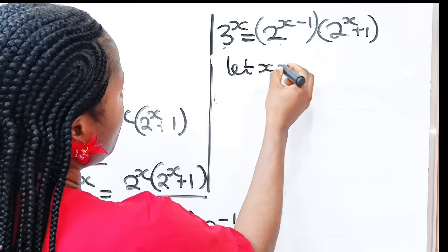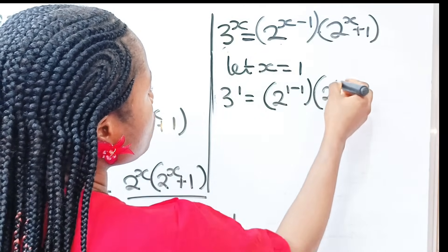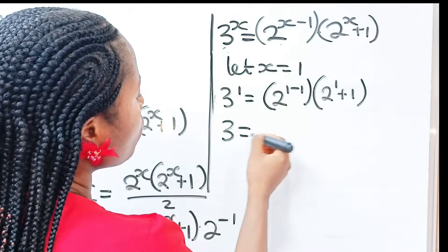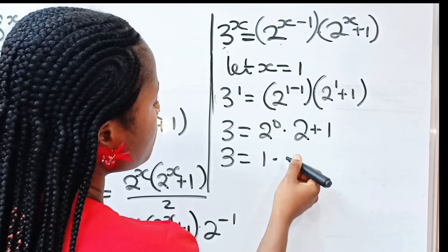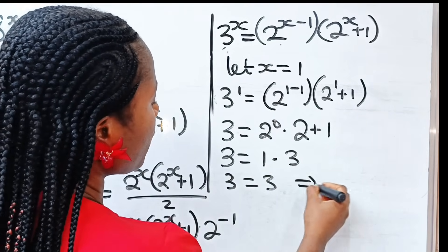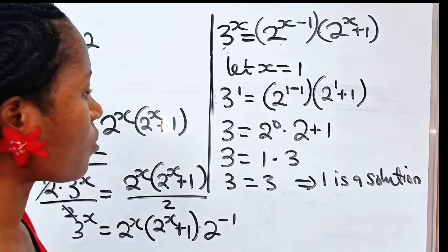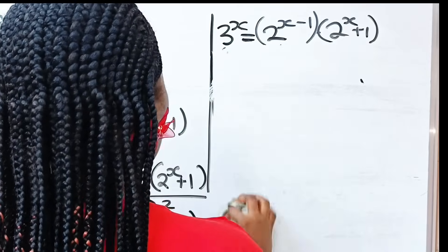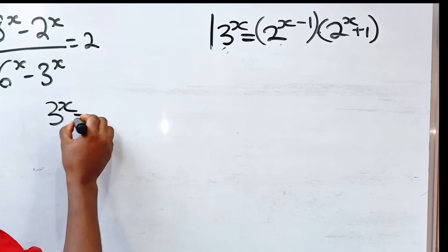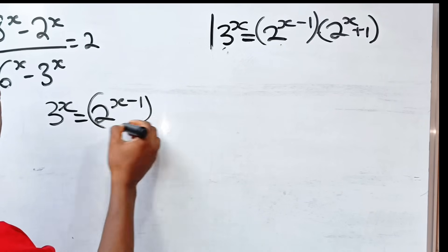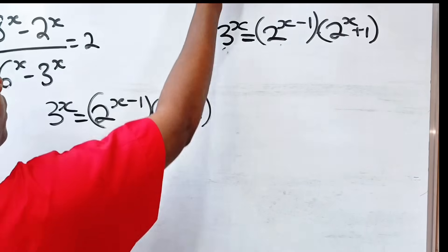Let x be equal to 1. We have 3 to the power of 1 is equal to 2 to the power of 1 minus 1, multiplied by 2 to the power of 1 plus 1. We have 3 is equal to 2 to the power of 0 multiplied by 2 to the power of 2, which is 1 multiplied by 3. So 3 equals 3. This implies that x equals 1 is a solution.